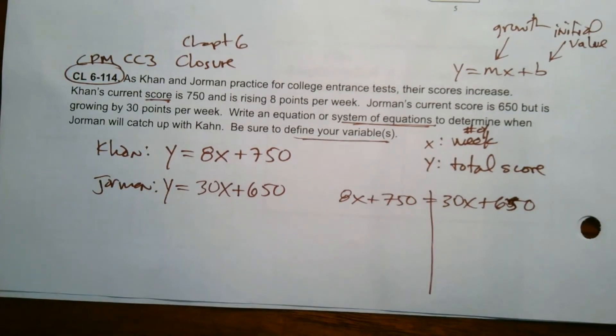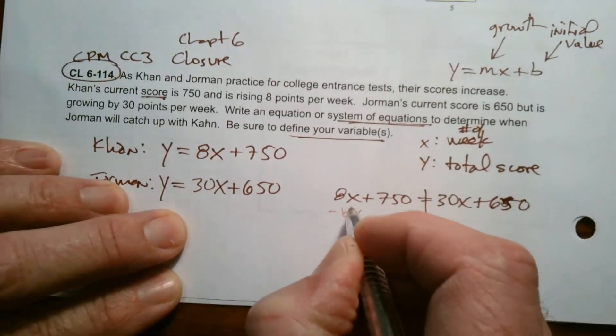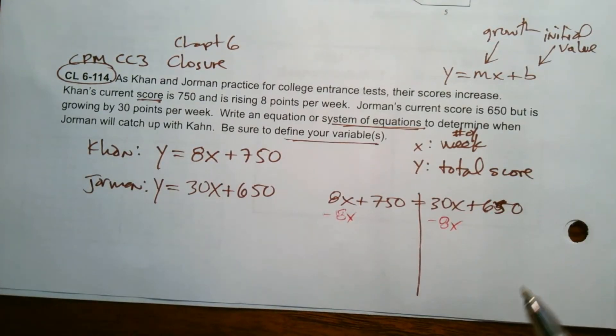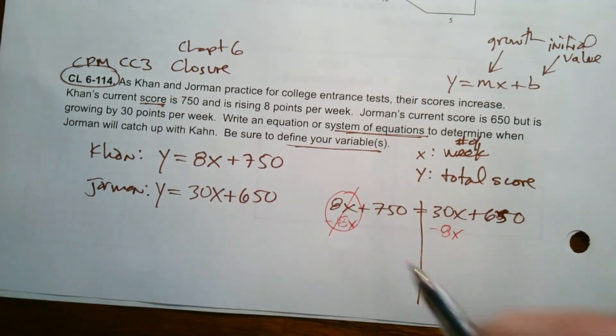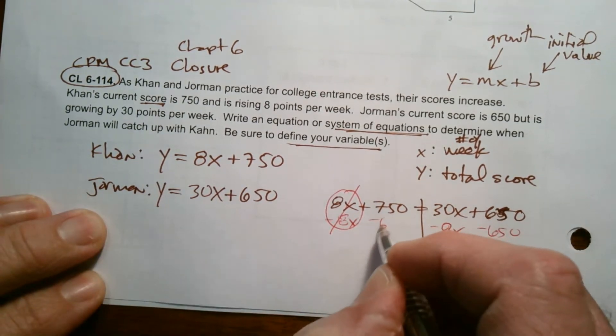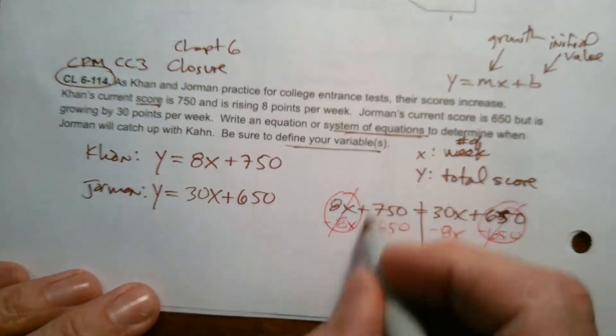So I'm going to subtract 8X from both sides. That way I can keep some positives here. So that'll get rid of this. And then at the same time, I'm going to subtract 650 from both sides and that gets rid of this.